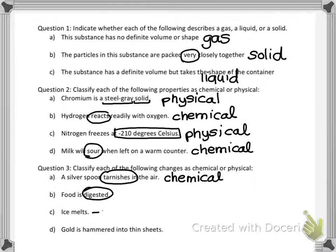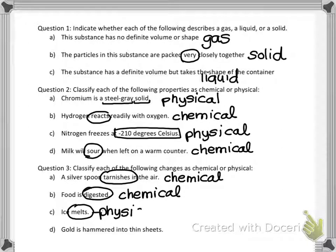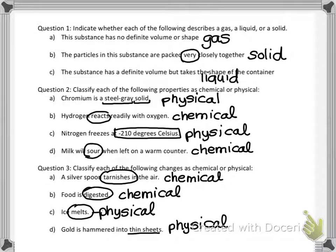Food is digested — digestion is a chemical process; we know it creates new things in the body. Ice melts — melting describes a state change, and going from one state to another is always a physical change. Gold is hammered into thin sheets — changing shape, in this case into thin sheets, is physical. It's the same as chopping wood or cutting paper; I still have the same substance, just a different size.